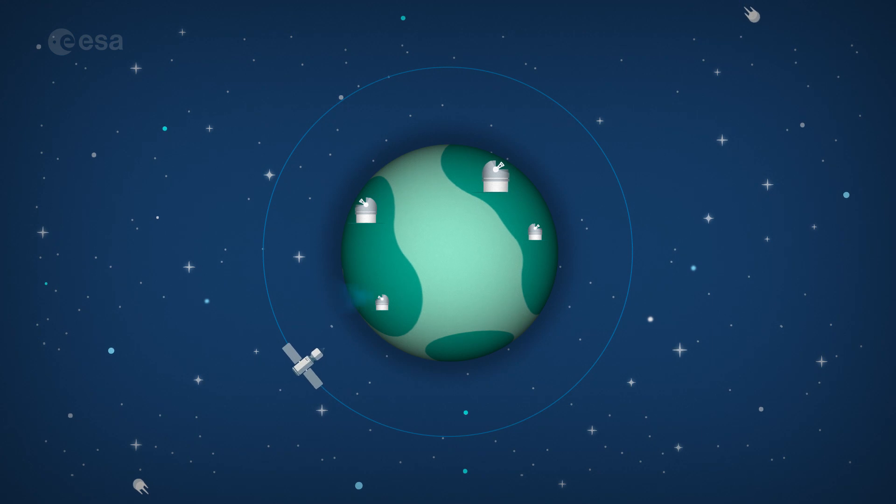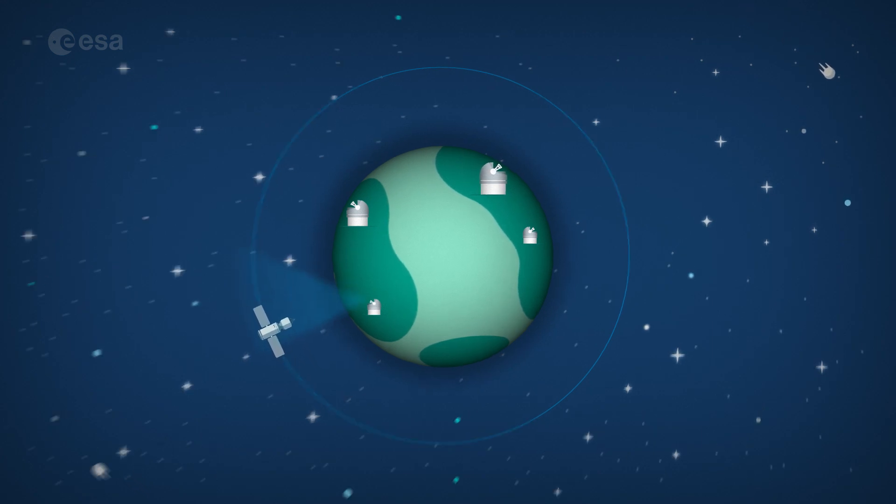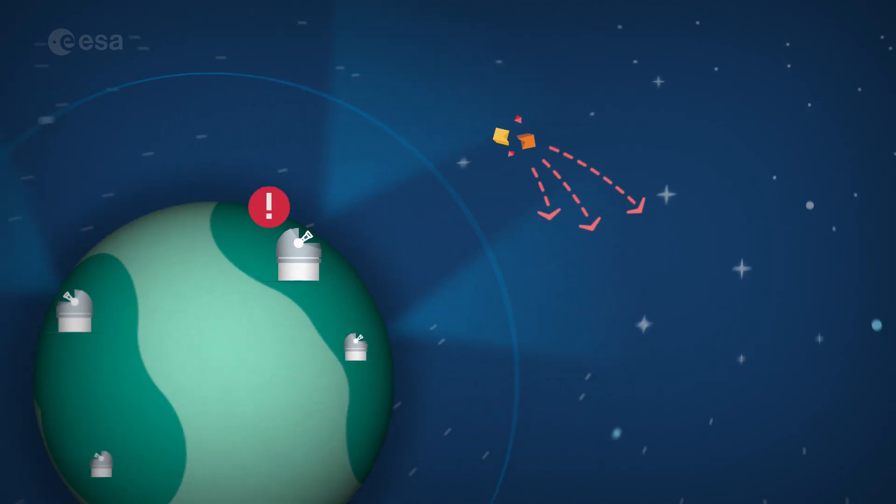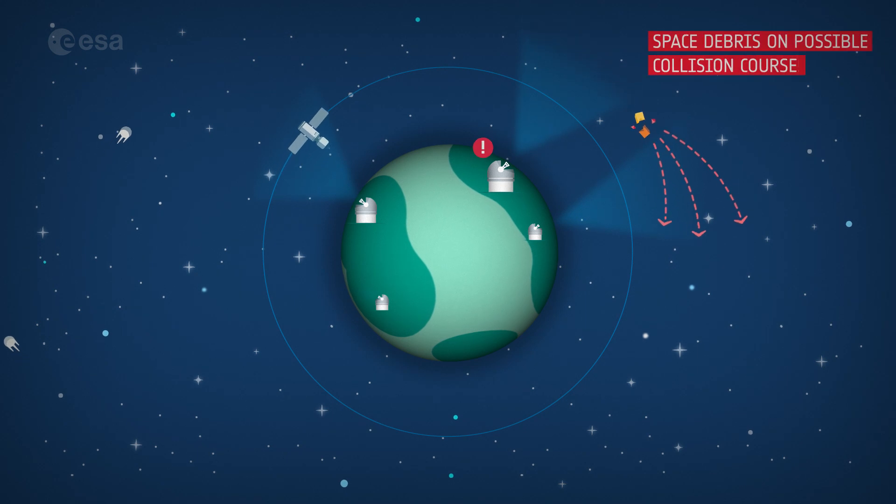ESA works hard to keep our satellites safe. When a piece of space debris is on a possible collision course with one of our missions, an alert is raised. We receive thousands of alerts per day for our fleet of roughly 20 spacecraft.